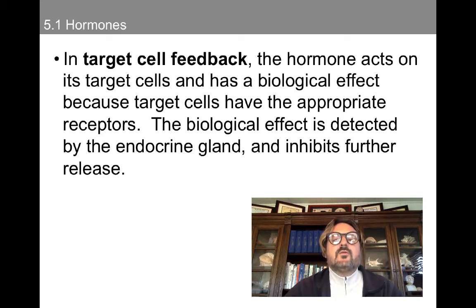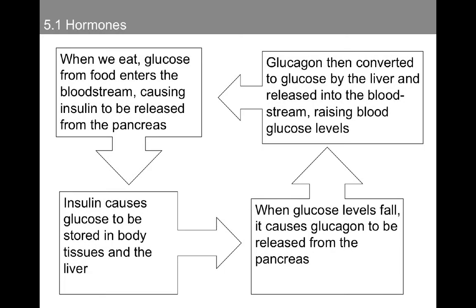In target cell feedback, the hormone acts on its target cells and has a biological effect, because target cells have the appropriate receptors. The biological effect is detected by the endocrine gland and inhibits further release. For instance, if we're hungry, we'll eat. Glucose from the food enters the bloodstream, causing insulin to be released from the pancreas. The insulin causes the glucose to be stored in bodily tissues as well as in the liver. As a consequence, glucose levels in the bloodstream fall, and this triggers the release of glucagon from the pancreas. Glucagon is then converted to glucose by the liver and released into the bloodstream, raising blood glucose levels.